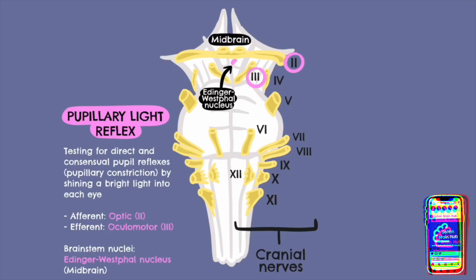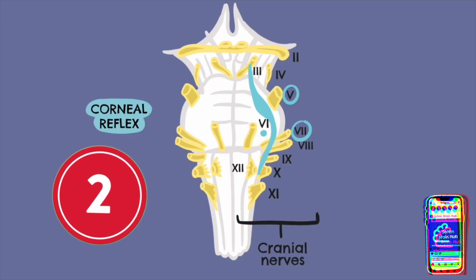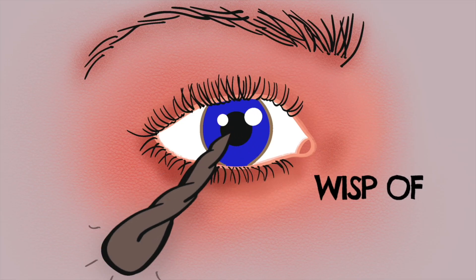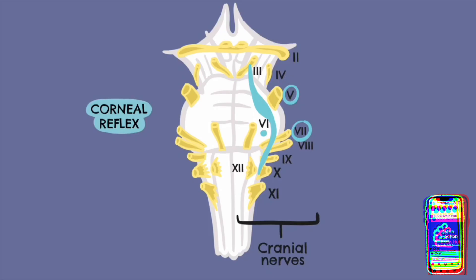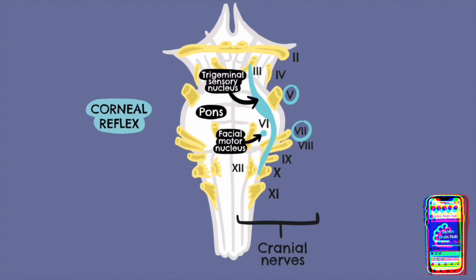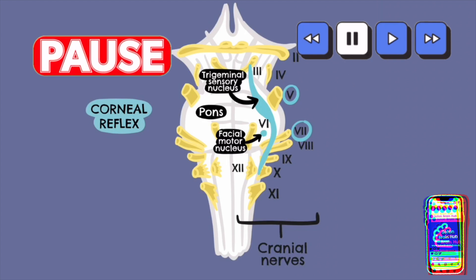The corneal reflex tests for blinking in response to brushing the cornea of the eye with cotton wool. In brainstem death, the expected response would be the absence of this reflex. The afferent nerve is the ophthalmic division of the trigeminal nerve. The brainstem nuclei involved are the trigeminal and facial nuclei in the pons of the brainstem, and the efferent nerve is the facial nerve, which responds via contraction of the orbicularis oculi muscle.